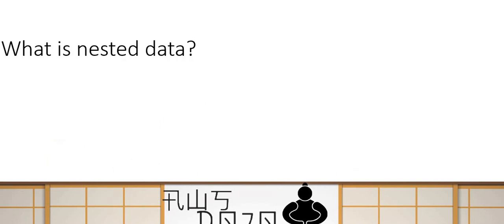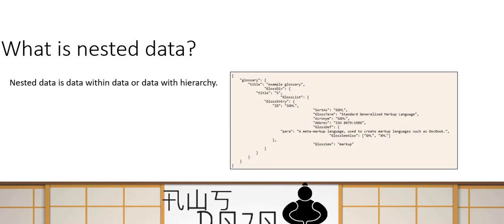First let's try to understand what is nested data, because people can have different words or different names for this kind of data. Nested data is basically data within data — data which has hierarchy. This JSON example you see here is an example of nested data, where an ID can have subfields and those can have further subfields and values. This data is nested because it is hierarchical and data is needed to complete the information.